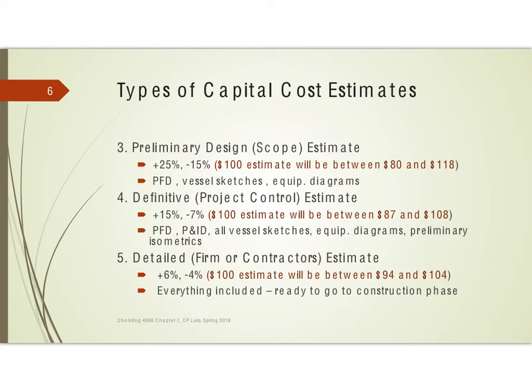I've made decisions like what type of packing to use, whether I'm going to use flange nozzles — that sort of thing. At this stage I should be over by maybe 25% and short by maybe 15%.